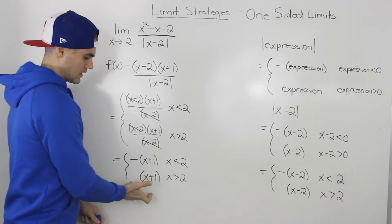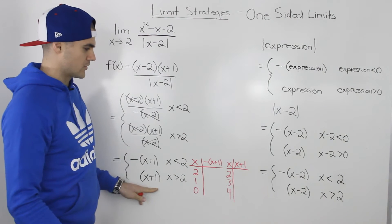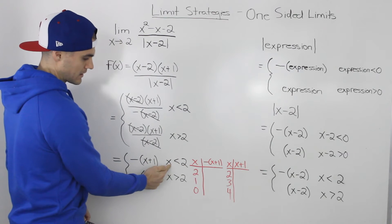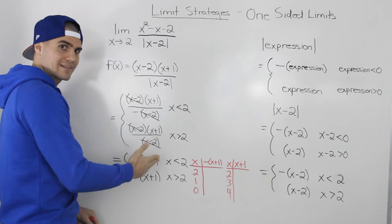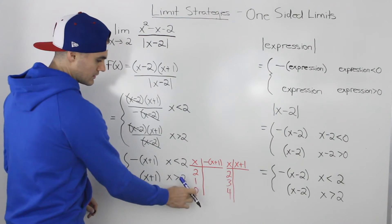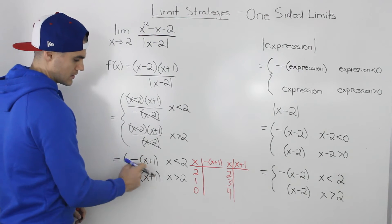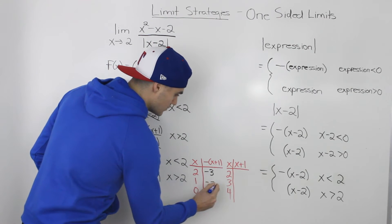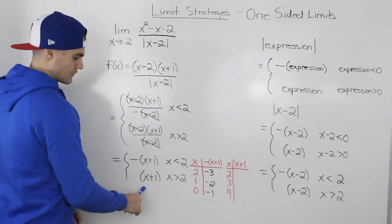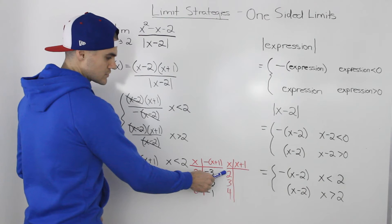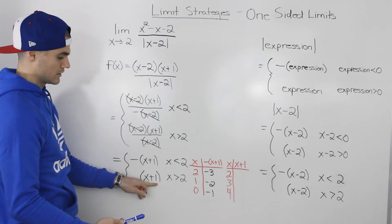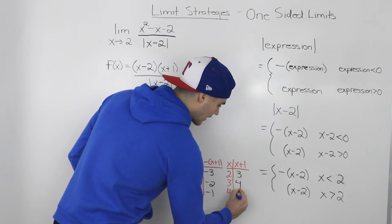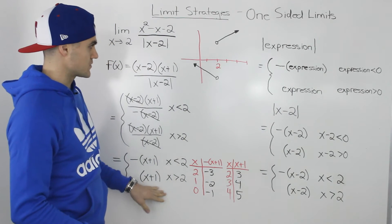To help graph this, we can create a table of values. For the piece negative (x plus one) when x is less than two, plugging in x = 0, 1, 2 gives y = -1, -2, -3. For the piece (x plus one) when x is greater than two, plugging in x = 2, 3, 4 gives y = 3, 4, 5.